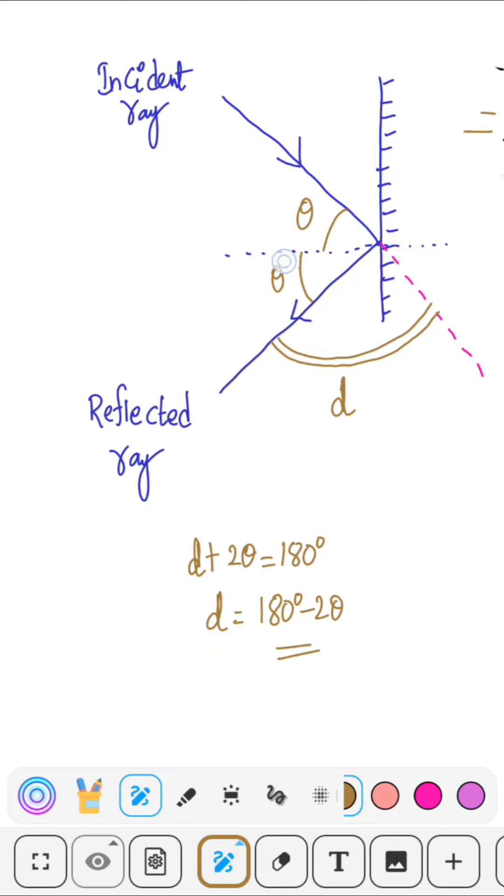Now, if you measure this entire angle, it must be a straight angle which is 180 degrees. Therefore, d plus 2 theta must be equal to 180 degrees, d is equal to 180 minus 2 theta. In this way, we can find angle of deviation for plane mirror.